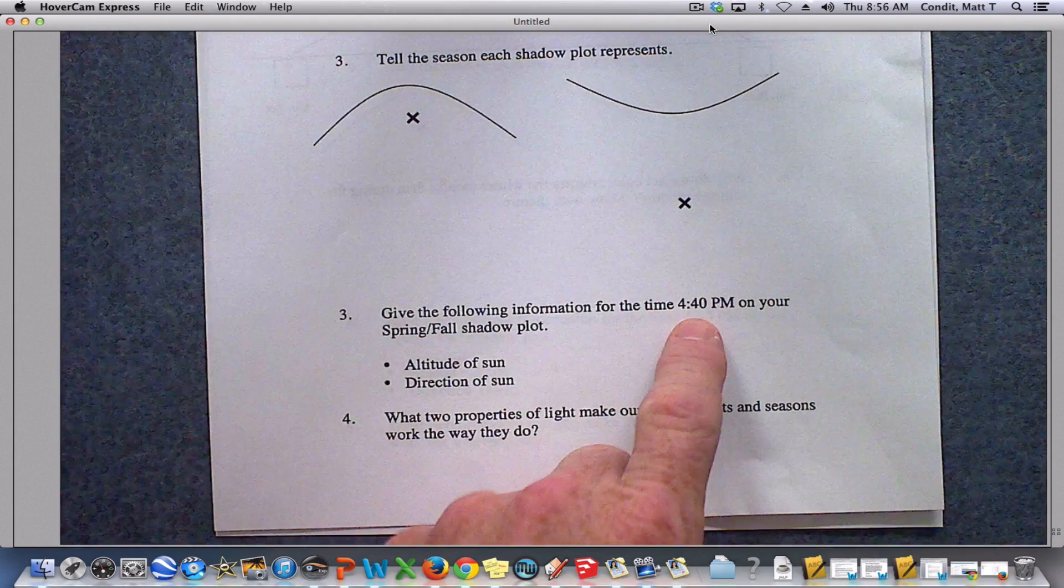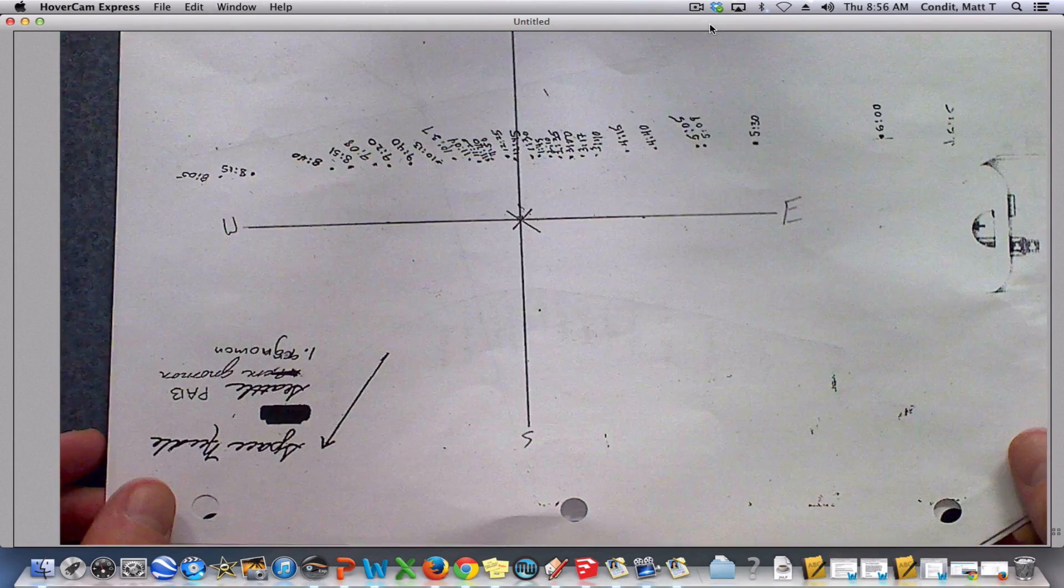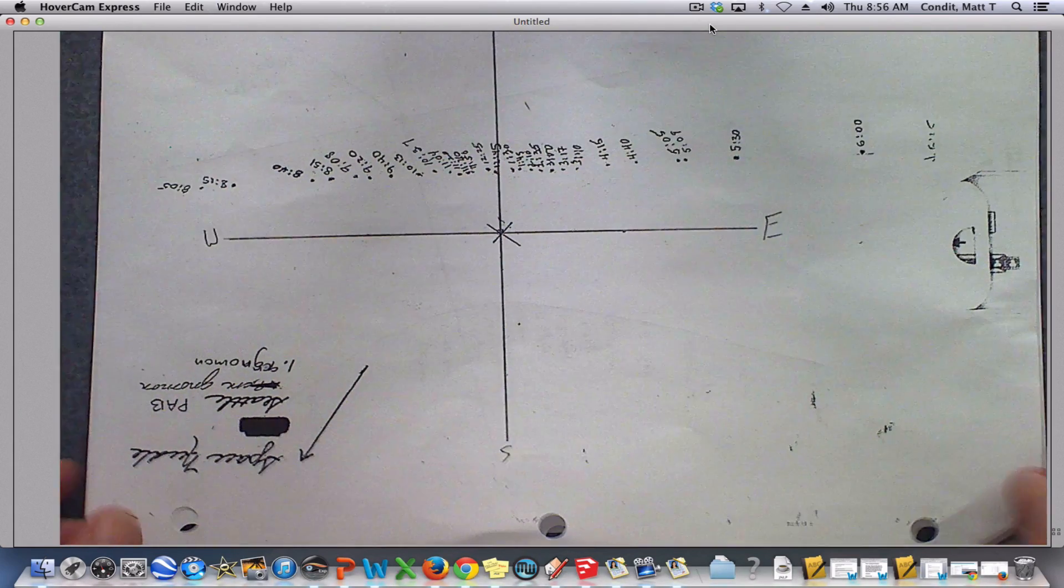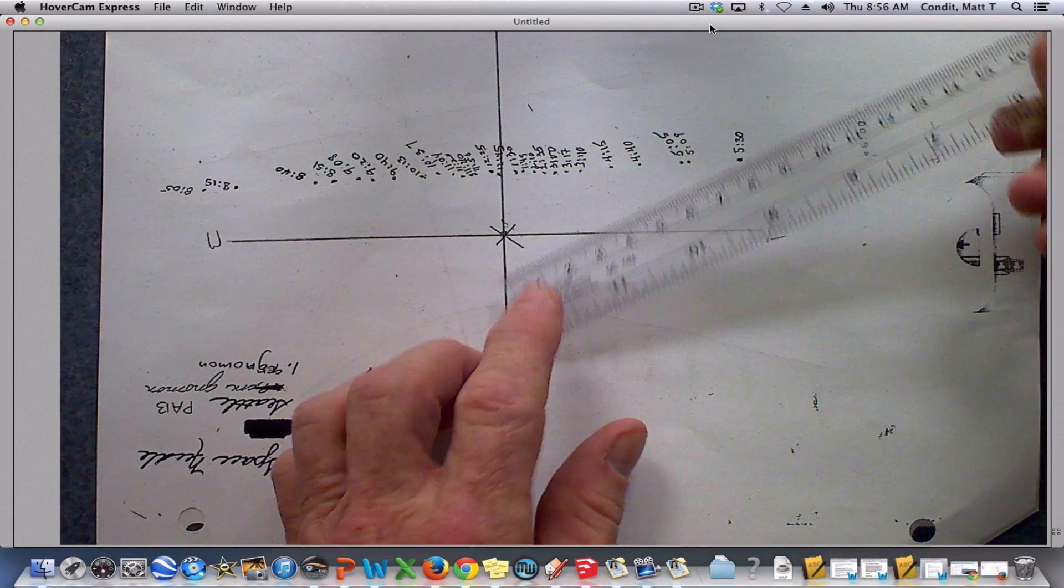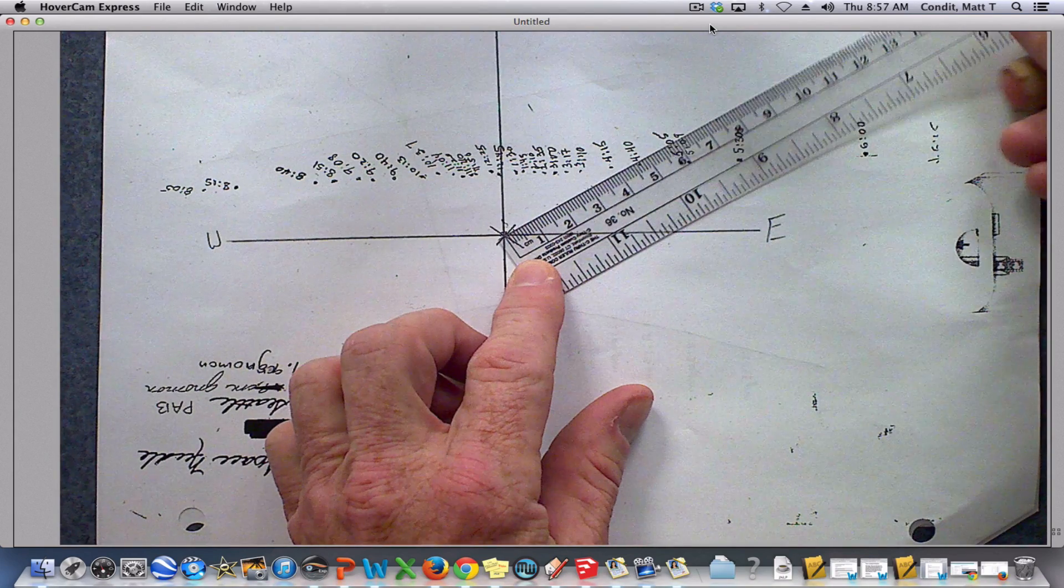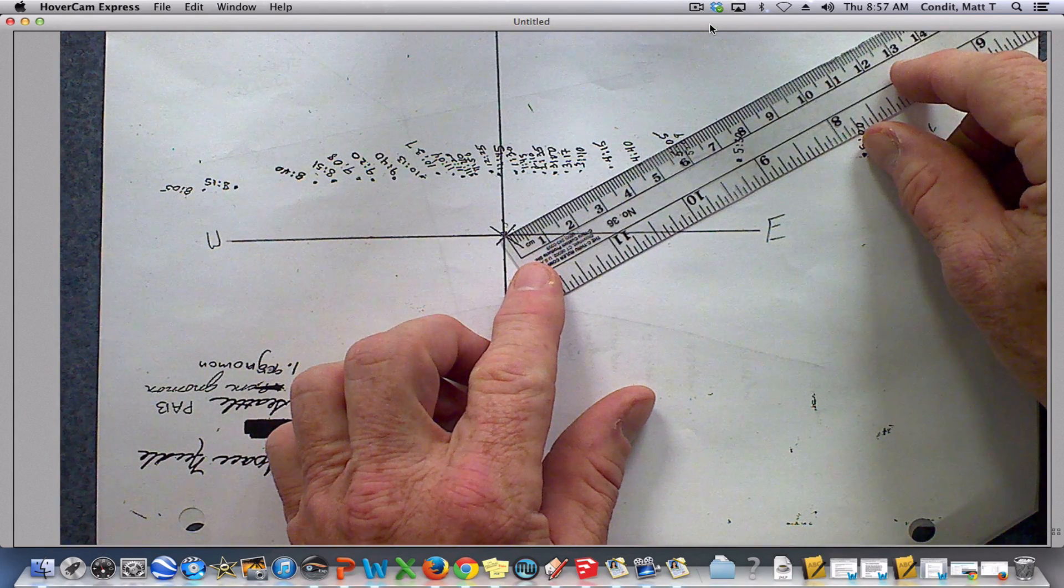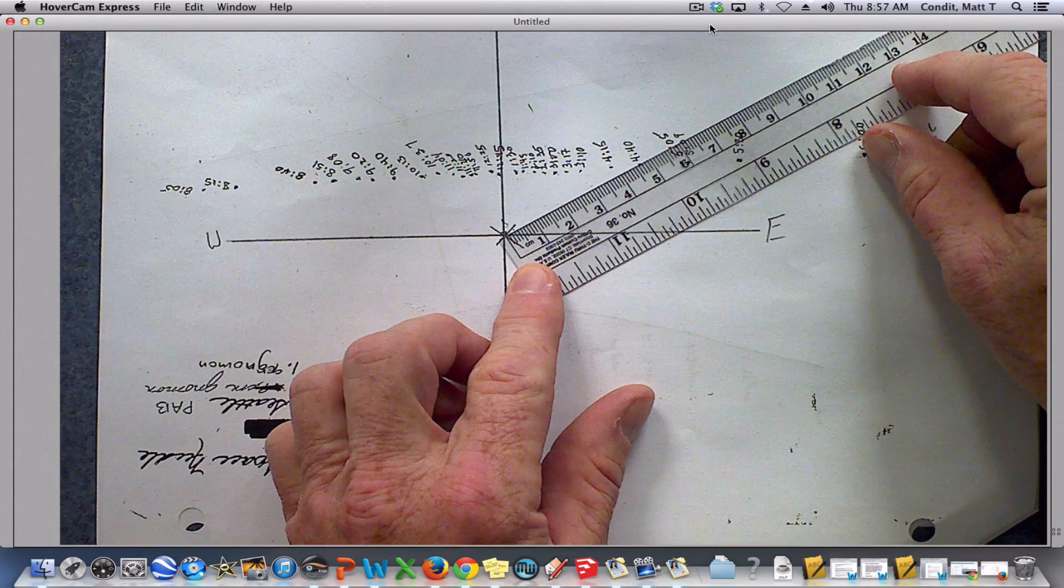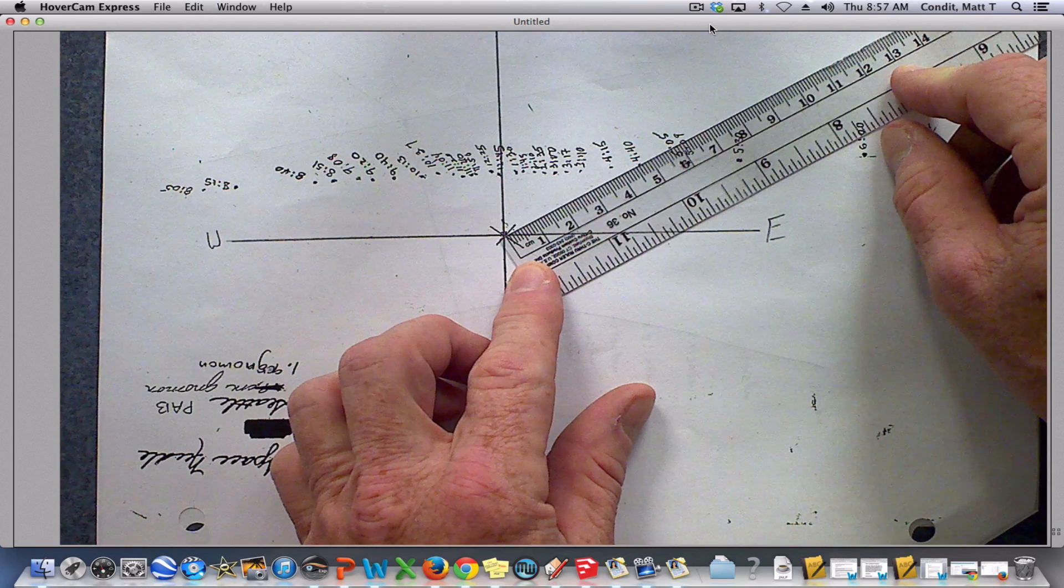Now the first thing we're supposed to do is find the altitude of the sun. And if we're going to find the altitude of the sun, like all the times we've done altitudes, we have to draw a triangle and we have to get the measures of that. So the first measurement I need is the length of the shadow. So I've got to go over here from the gnomon to 4:40. And I see that my shadow length there is about 4.7 centimeters.